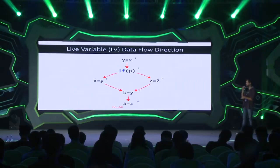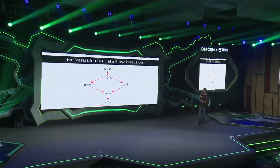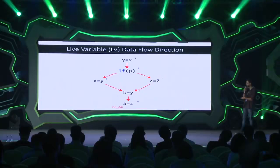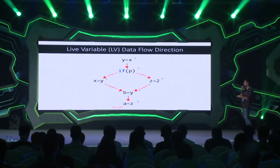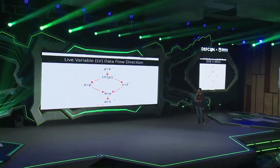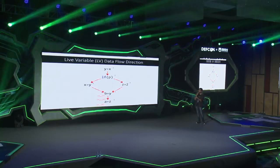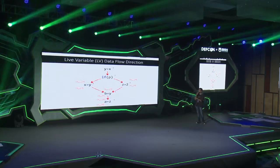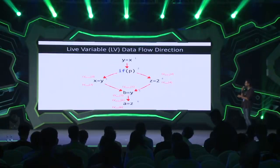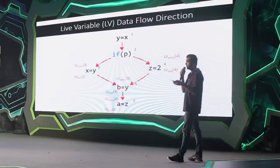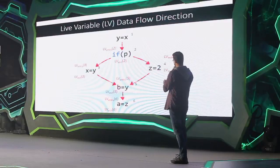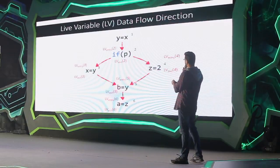If we compute LvExit of statement 7, which is the last statement, it will be phi — there's no variable used after the last statement. This is the initial point for the algorithm. Using LvExit of 7 and the def-use set, we compute LvEntry of 7. Then LvExit of 6, LvEntry of 6, LvExit of 5, LvEntry of 5, and so on. At a branch point, we merge LvEntry sets from statements 3 and 4 using a union operator, and that result goes into LvExit of 2.